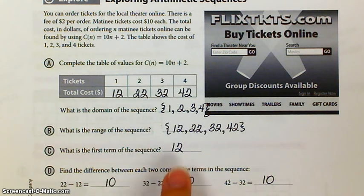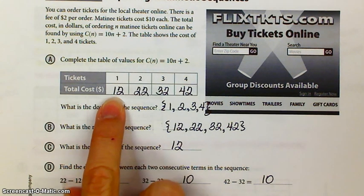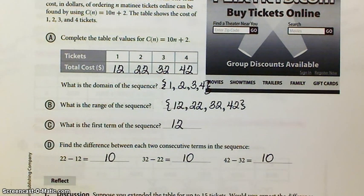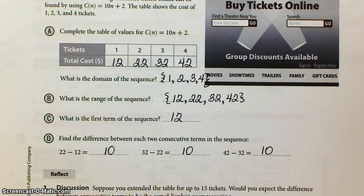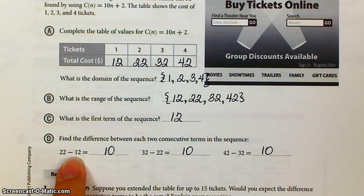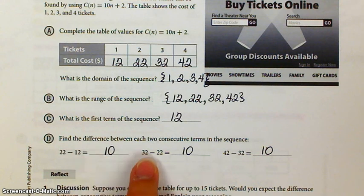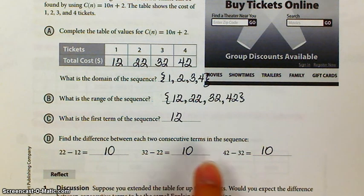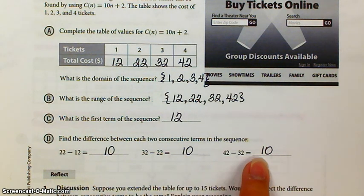Okay. First term of the sequence is 12. Find the difference between each two consecutive terms in the sequence. So second term minus first term is 10. Third term minus second term, 10. Fourth term minus third term, 10. So there is a common difference in this arithmetic sequence.